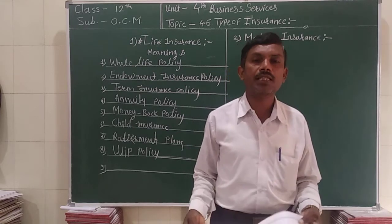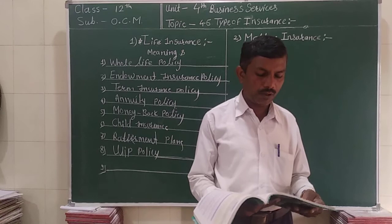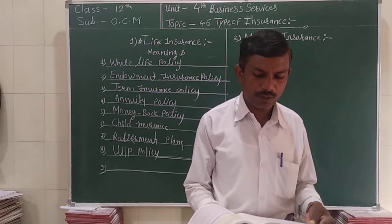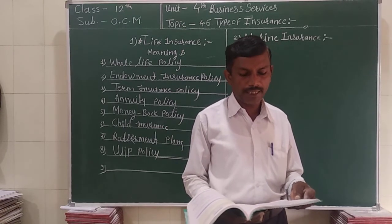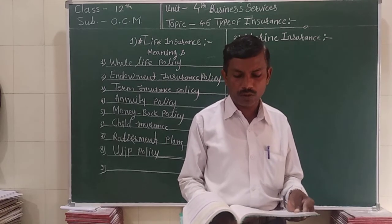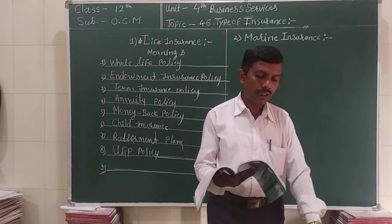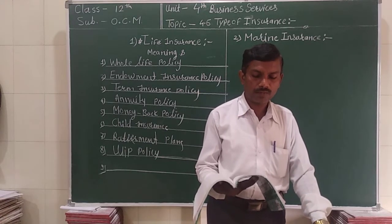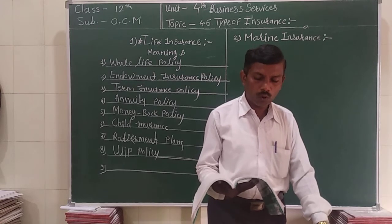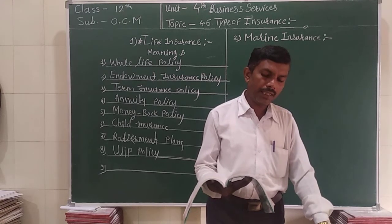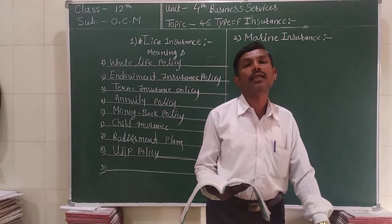The fifth type is money back policy. Money back policy provides a regular percentage of the sum insured as income during the life of the policy, and also guarantees a benefit for the sum insured. Generally, money back policy is available in four terms: 12 year, 15 year, 20 year, 25 year, and other factors.